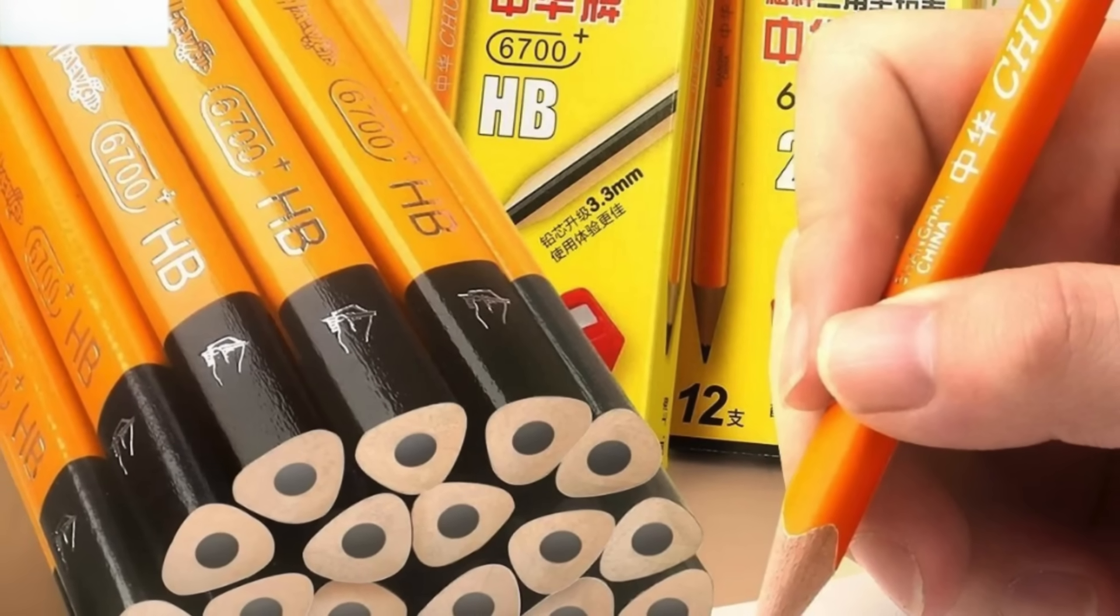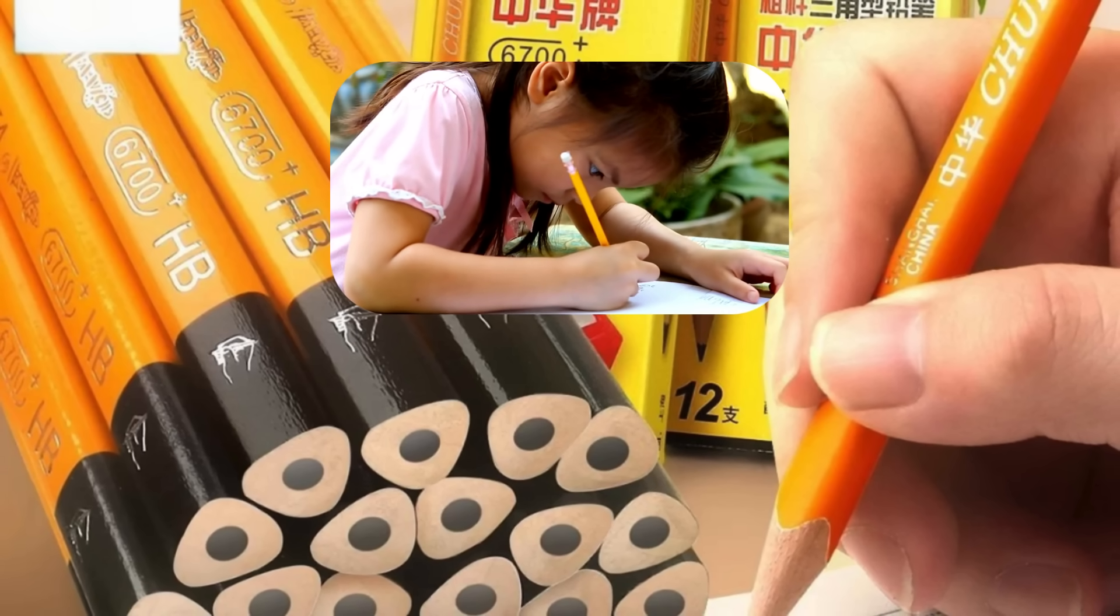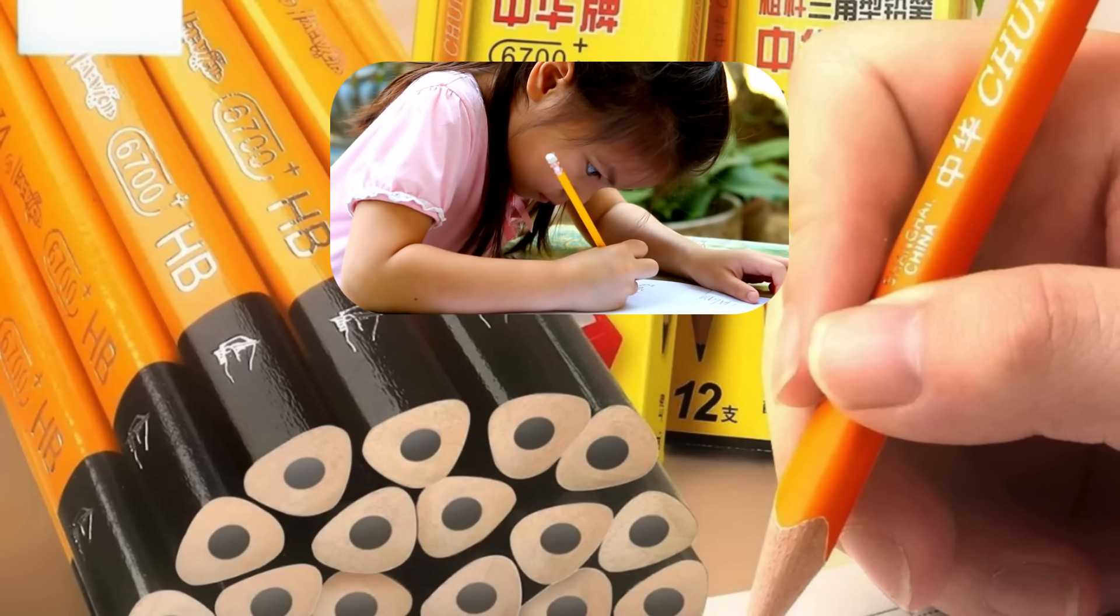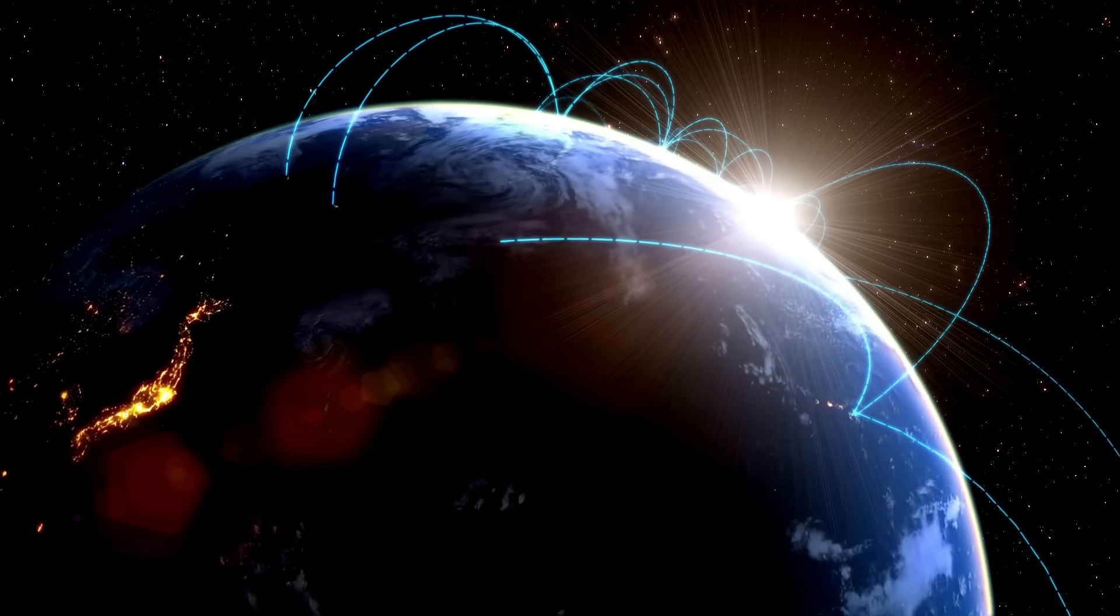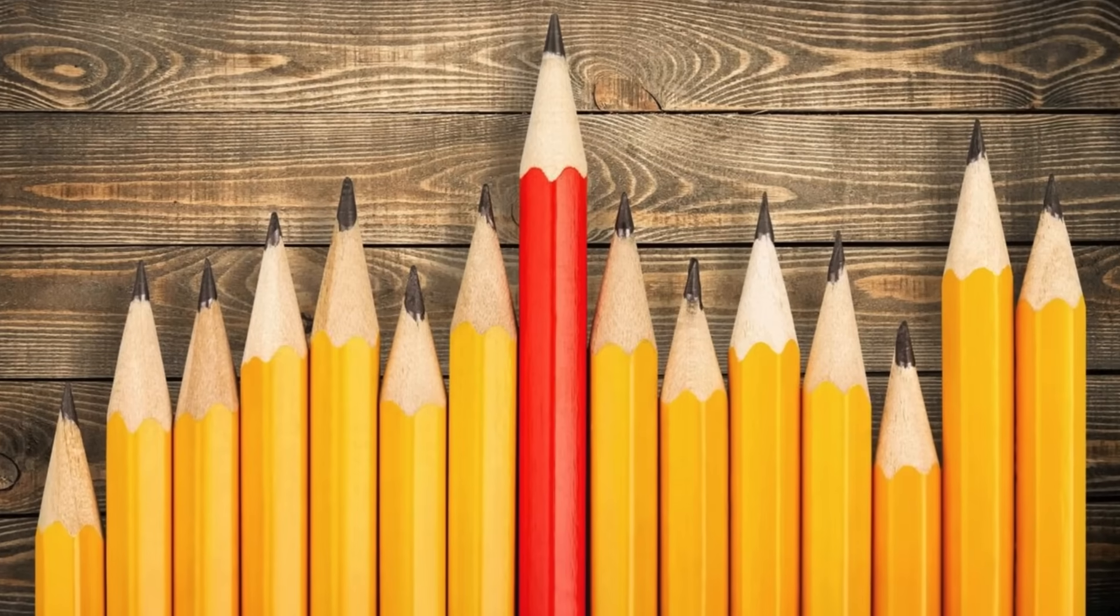There are also triangular pencils now, especially for children, since the shape encourages the proper tripod grip for writing. So, while hexagonal pencils dominate the general writing world, they aren't the only design in play.